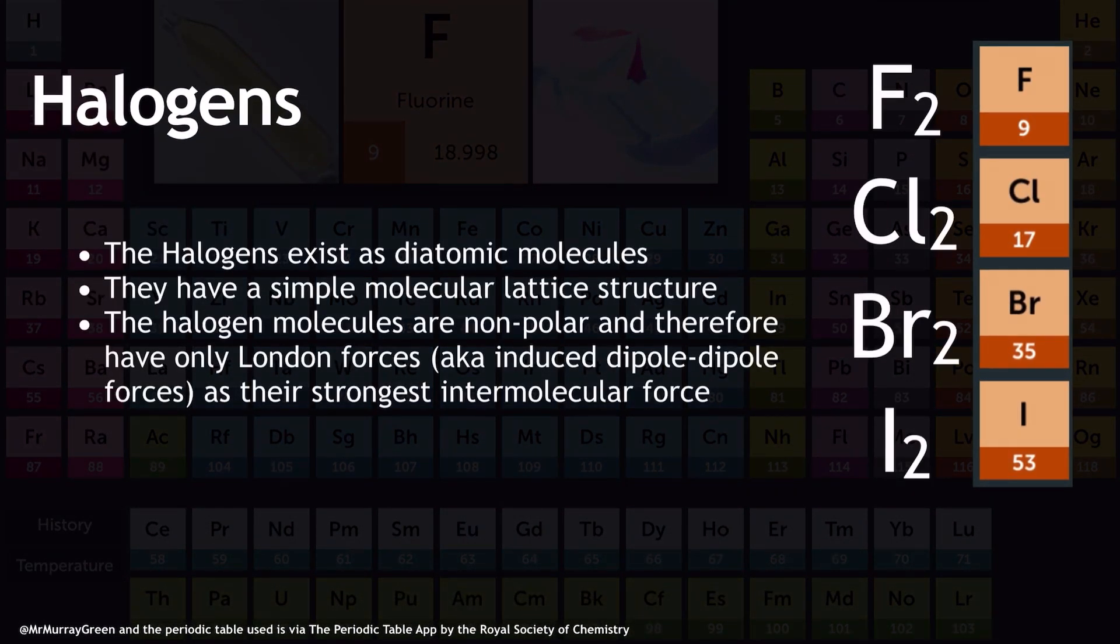We're going to kick off here with what are we actually looking at? The halogens exist as diatomic molecules, and they're all in a simple molecular lattice structure, which means between the molecules in a sample of fluorine or bromine, we've only got London forces, because the halogen molecules are non-polar, and that's the strongest type of intermolecular force that we're going to get. London forces can also be described as induced dipole-dipole forces, and you may describe an intermolecular force as an intermolecular bond. I just don't want you to think that when we melt or boil the halogens, we're breaking covalent bonds, because we definitely aren't. We're only breaking these London forces.